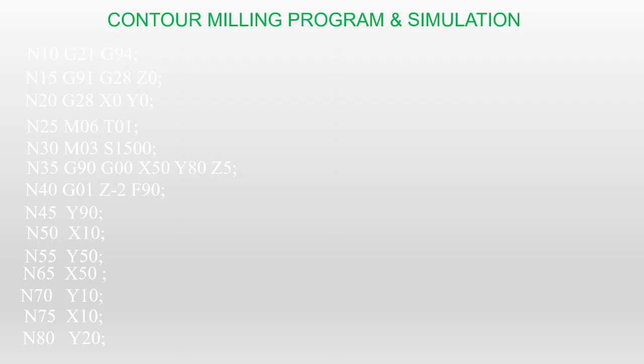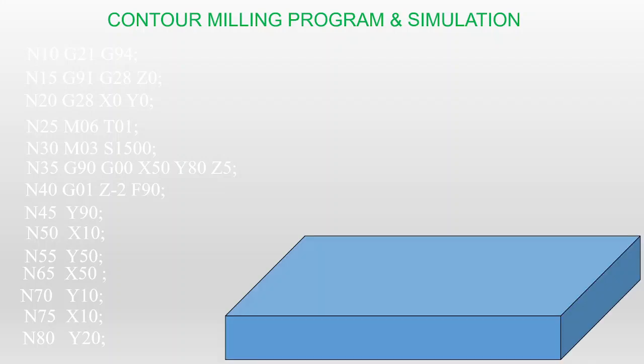Now I want to explain the CNC part program and simultaneously show how the tool movement is happening. First, I take the required dimension of the workpiece and identify the origin. I have taken the top-left bottom corner as my origin — X = 0, Y = 0, Z = 0 at this point. X and Y are on the surface of the workpiece. Z positive values are above the workpiece and Z negative values are below the workpiece — meaning to cut material you give a negative Z value.